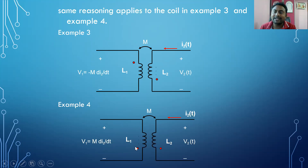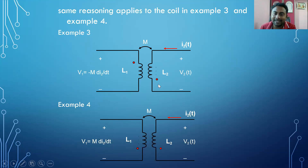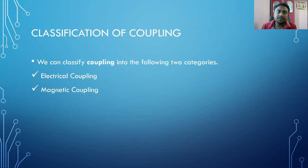If the coils have current entering and leaving at the same dotted terminals, we use the positive polarity. If it is opposite — one entering and one leaving — we use the negative polarity.